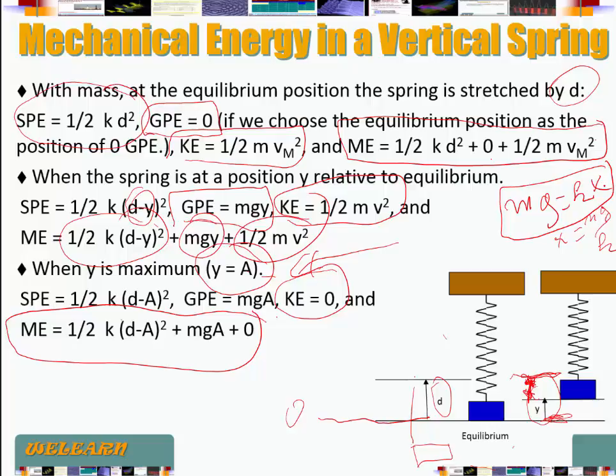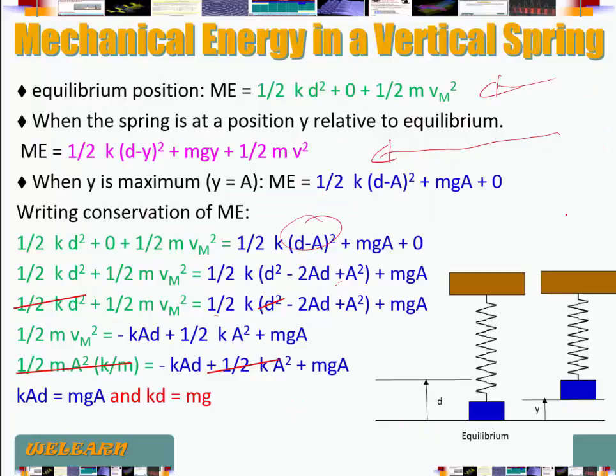So things work out consistently, and we can write the conservation of mechanical energy for a vertical spring-mass system the same way we do for horizontal ones. We just have to be careful to account for gravitational potential energy.